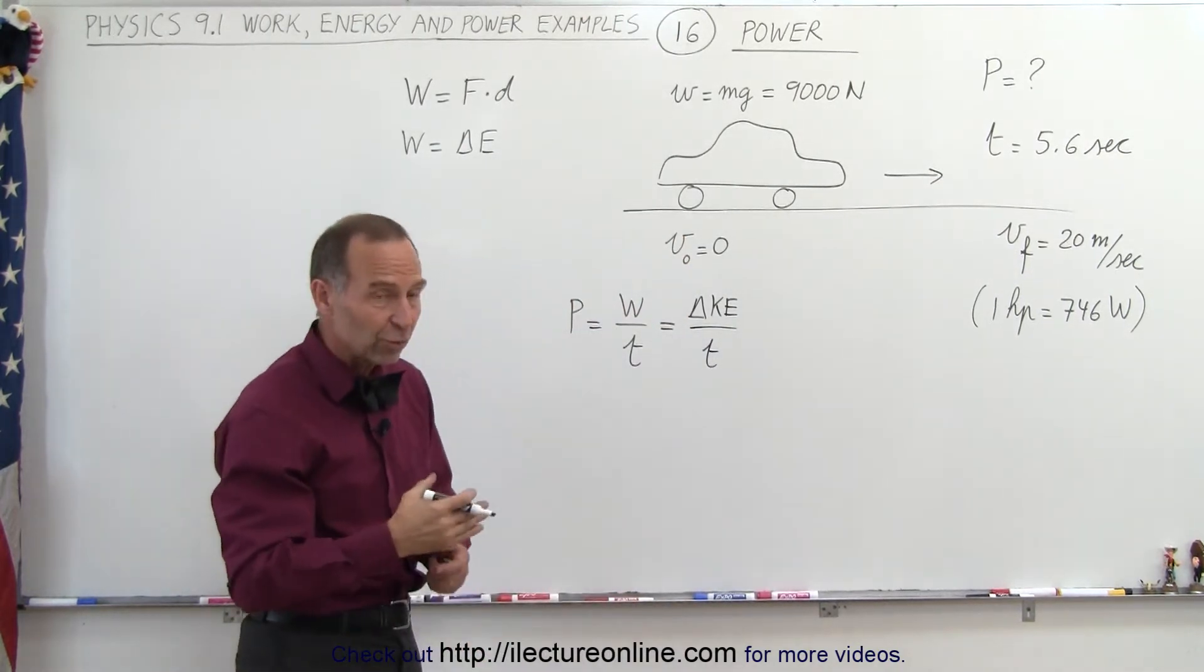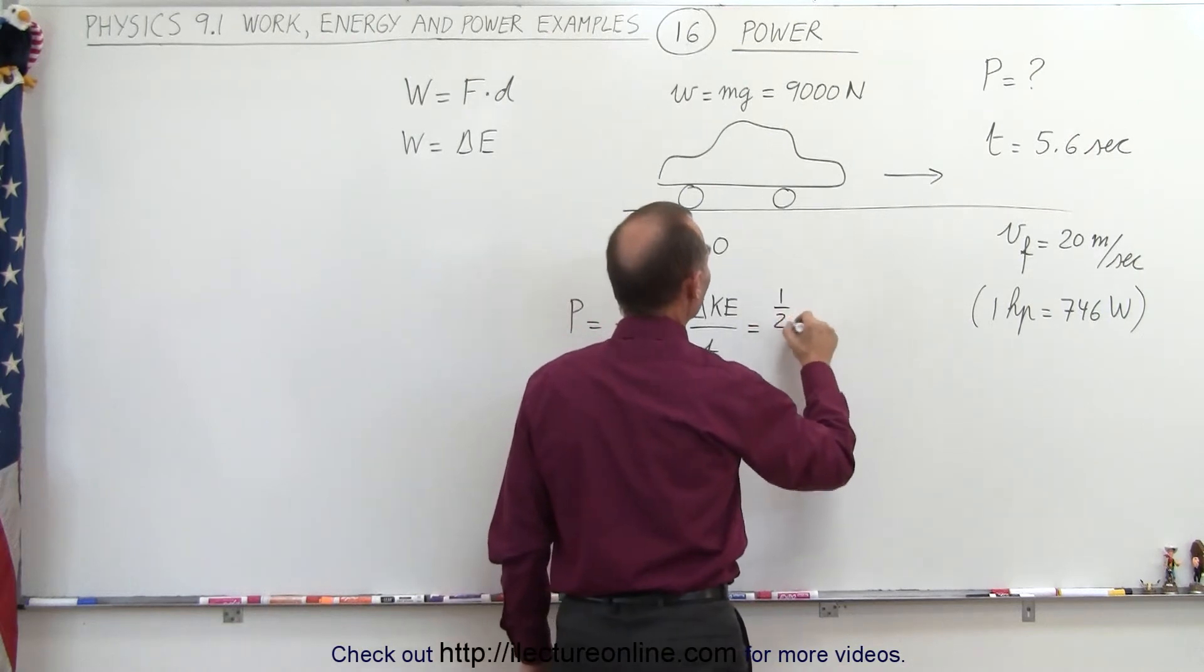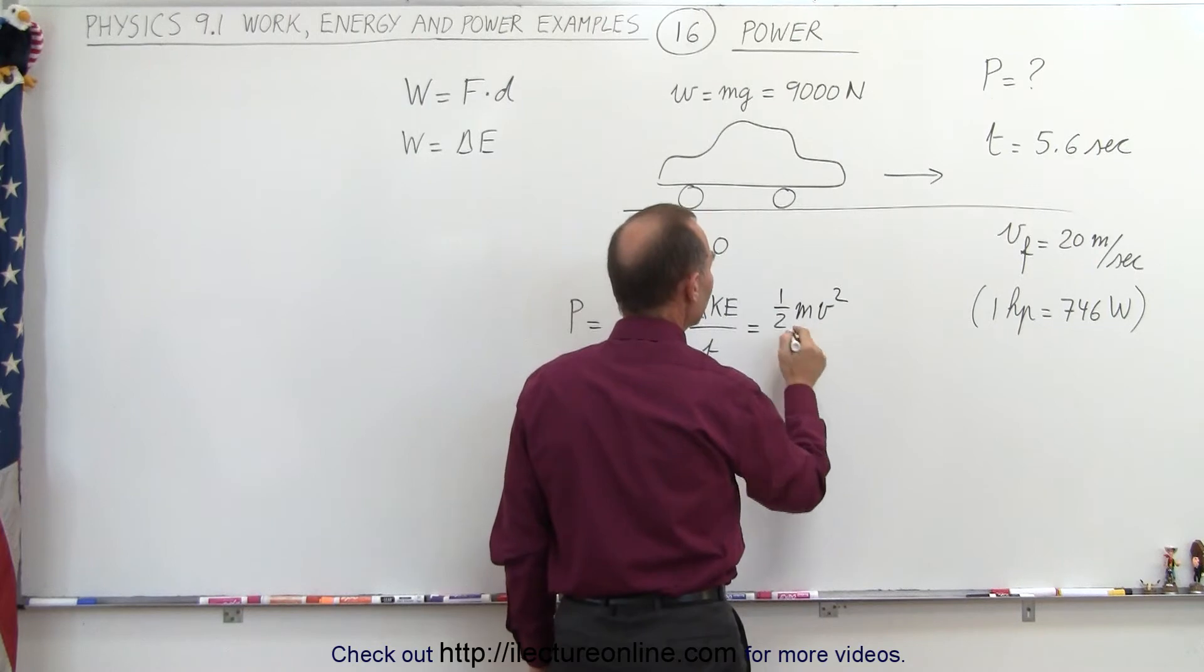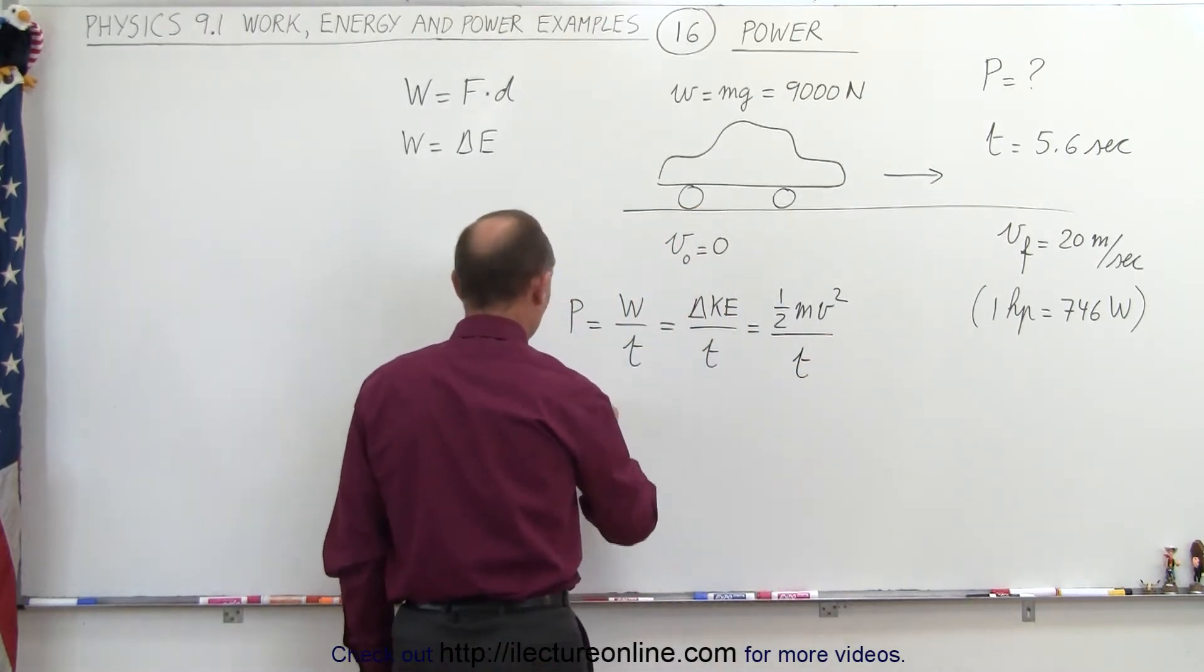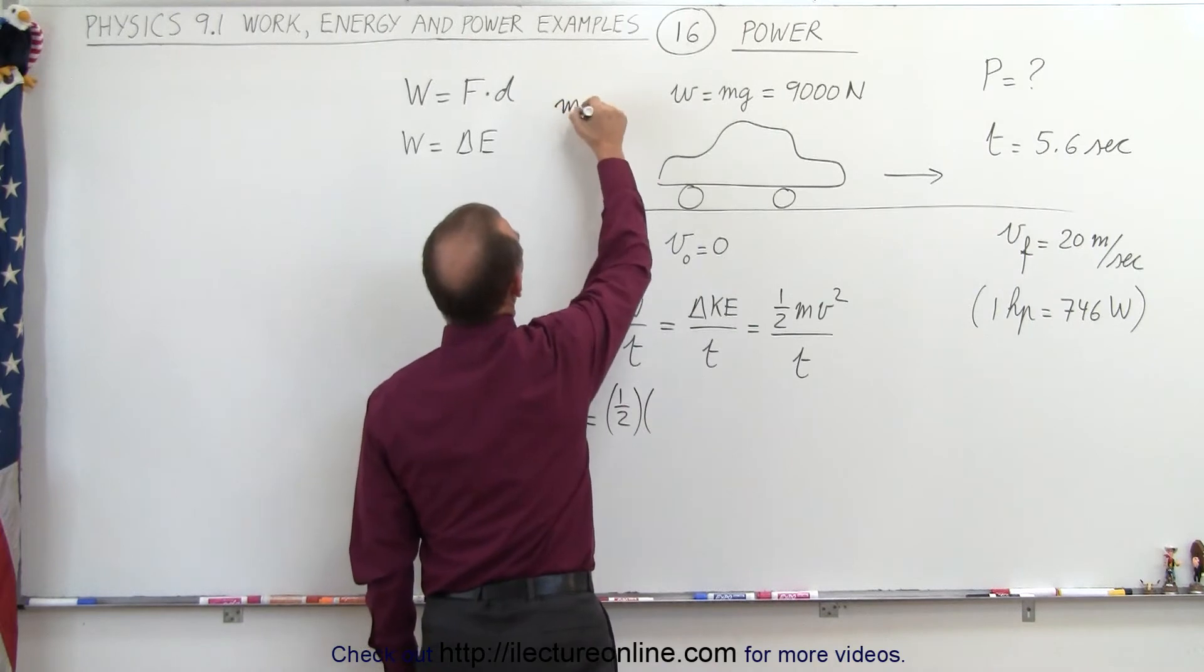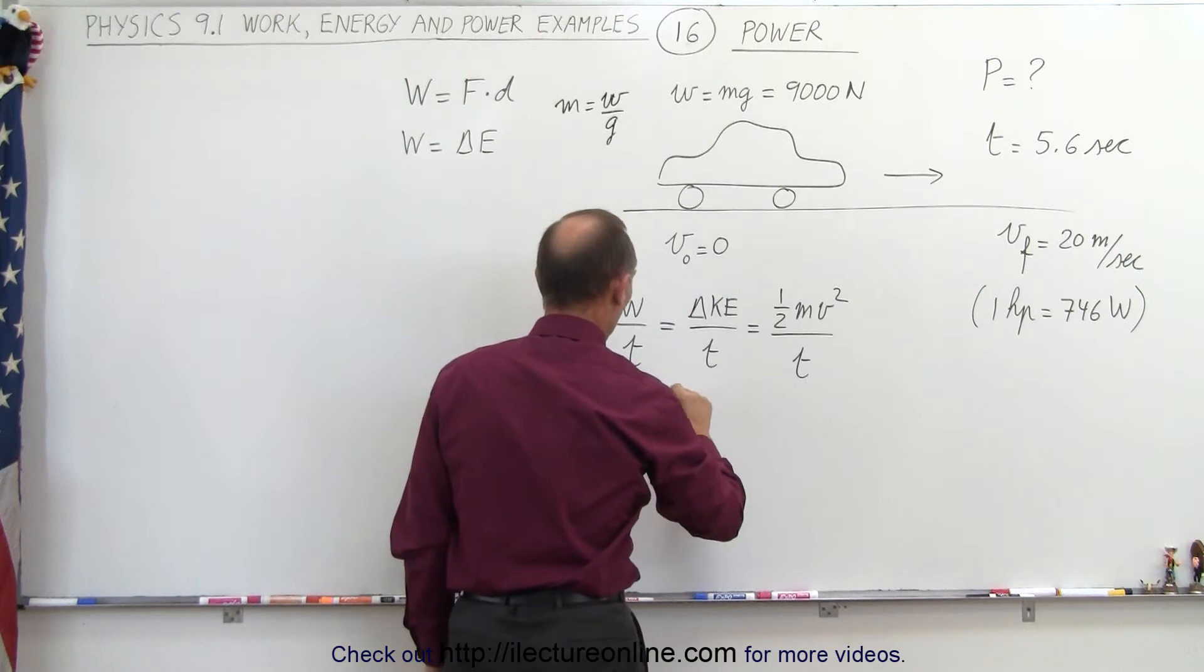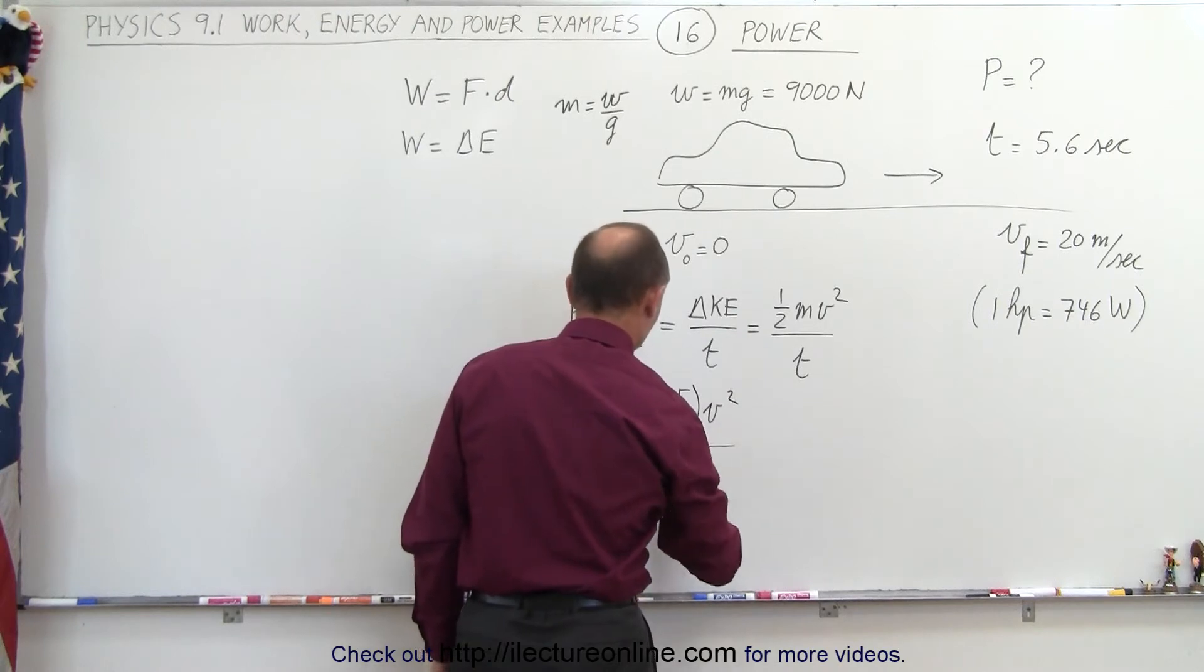Starting from zero, the change would be the final kinetic energy. So this would be equal to one-half mv squared, that's the final kinetic energy gained, divided by the time. Now we're ready to plug in some numbers. The power is equal to one-half times the mass. The mass can be defined as the weight divided by g. So we're going to have to write this as weight divided by g times v squared, that would be the final velocity squared, divided by time.